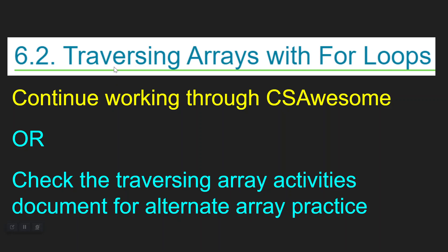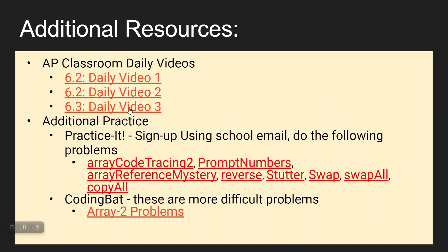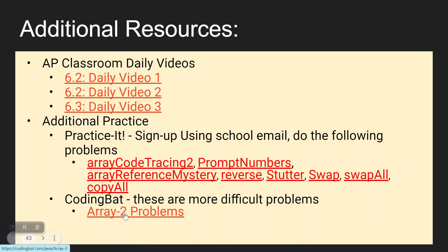At this point you're ready to start your work. You can do CS Awesome Unit 6 Lesson 2, or there will be a new array activities document for alternate array practice. Part of that practice is linked at this slideshow. You have some AP Daily videos for review, and there's a website called Practice It where you can sign up with your school email and do the listed problems. There's also Coding Bat Array Section 2 with more difficult problems where you actually have to loop through the array. Go ahead and get started, and I will see you in class.